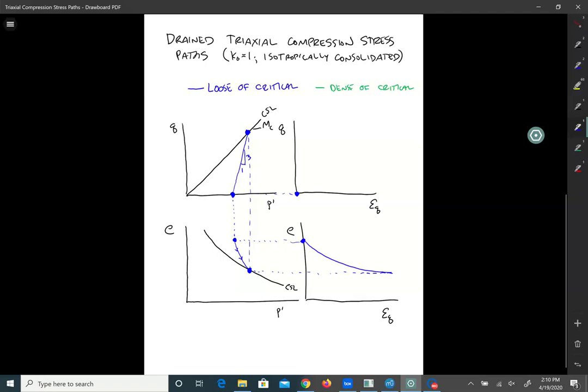And then the last one is also fairly easy. We'll draw a horizontal line over from the peak point, or the point at failure, and we end up with a curve like that. Oops, I drew it too high, erase it. There we go. Try it again. Okay, now we're at critical state. All right, so that was loose of critical.